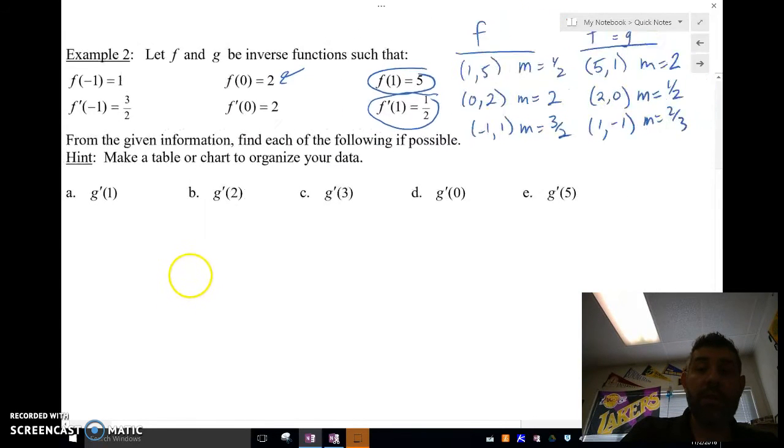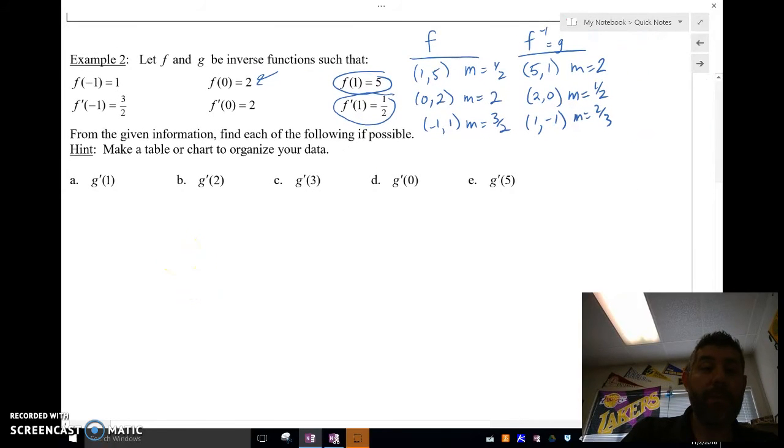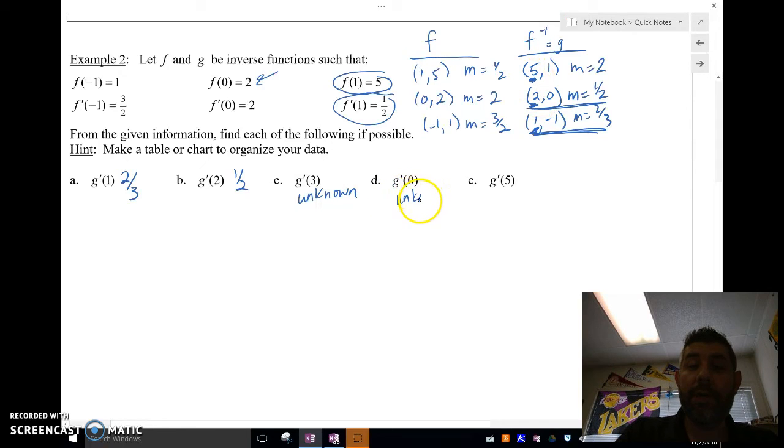So, g prime of 1 is right here. So that's 2/3. g prime of 2 is right here. So that's 1/2. g prime of 3, I don't have an x value of 3 here. So I don't know that. I'll just say unknown because I don't know it. g prime of 0, I don't have an x equal to 0 here. So I'll say that one's also unknown. And again, we don't want to be fooled by thinking f of 0, because it's not. It's g prime of 0. g prime of 5, here's my x equal 5. I'm talking about prime. So I'm talking about the slope. So my slope here is 2.